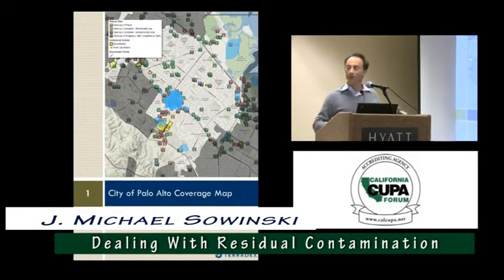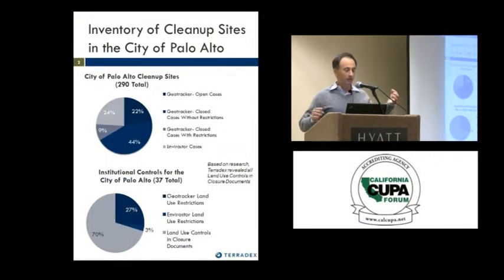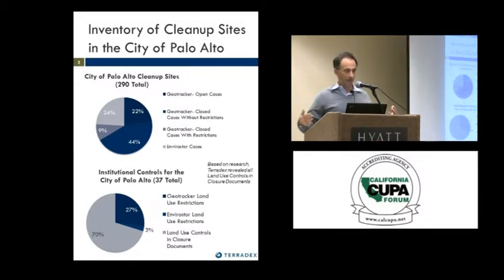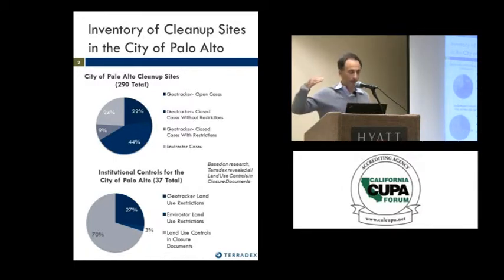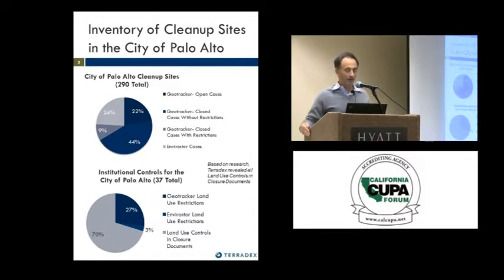In Palo Alto, basically what we did on a pilot scale — and I think it shows in here — we went to all of the different sources that have information about cleanup sites and residual contamination. GeoTracker and EnviroStory, and we actually went beyond that to the federal and DOD sources too, and pulled that together for the city. We actually went to the case closure summaries as well in the GeoTracker files and read them.